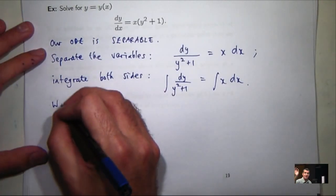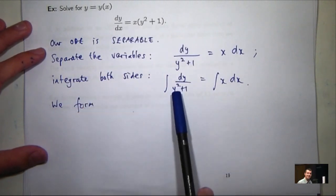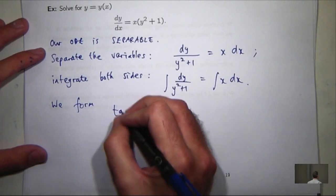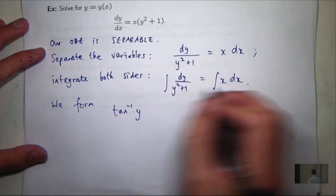So this is going to give me something like an inverse tan. And over here I am just going to get a half x squared plus c.